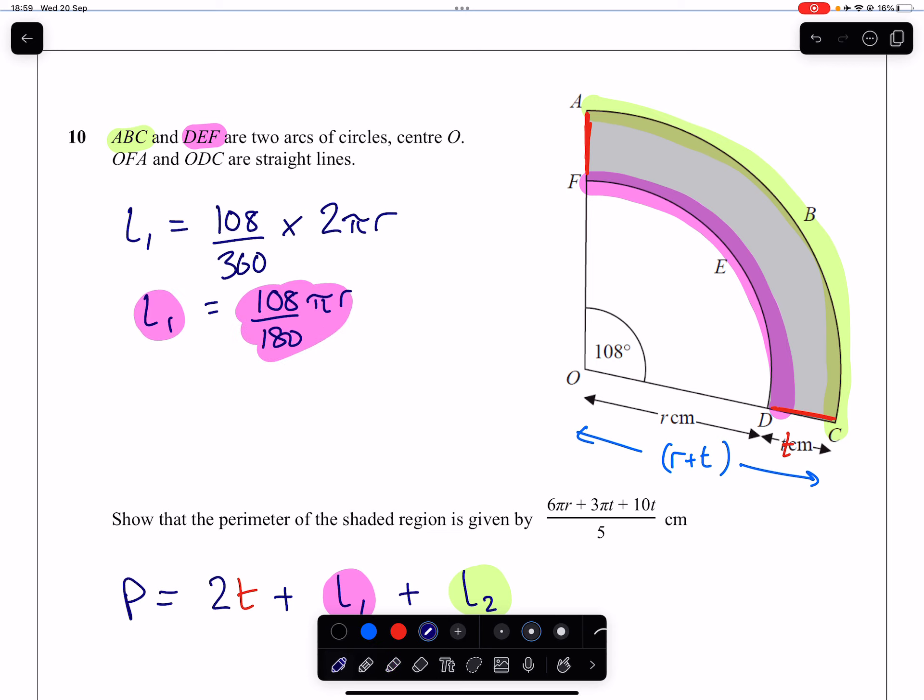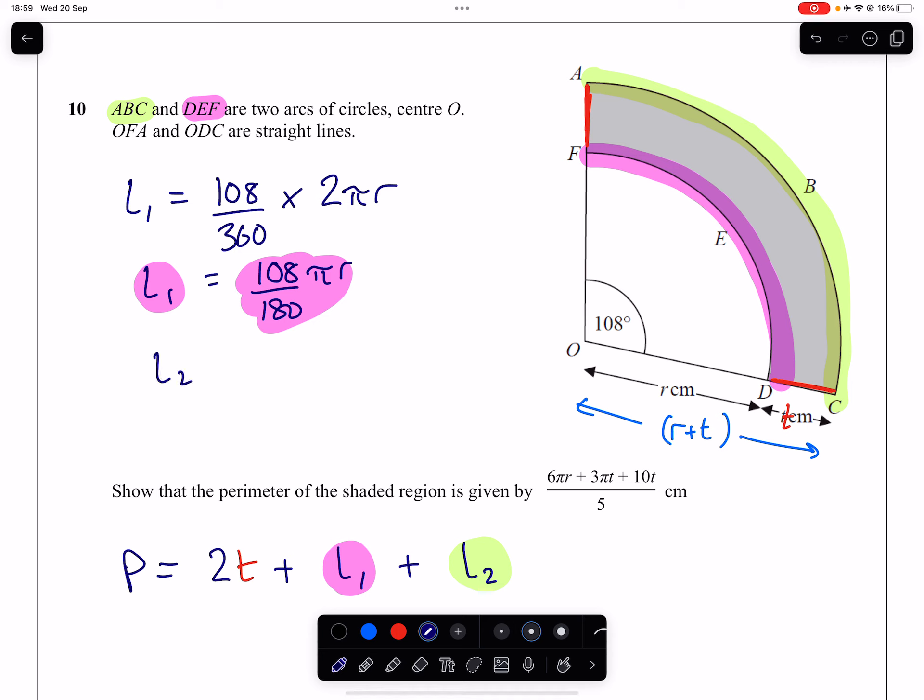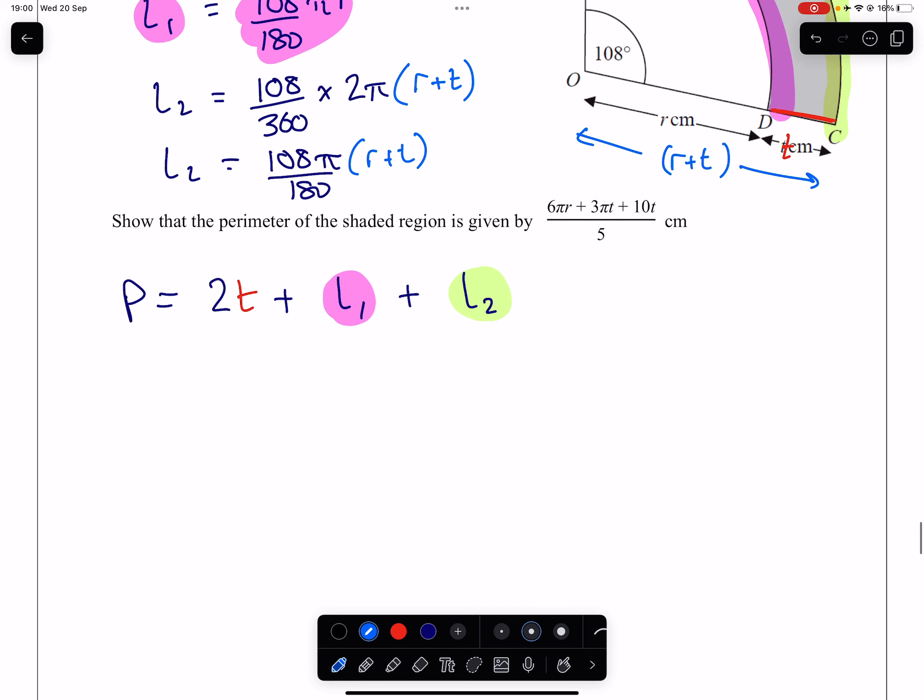So L2, very similar, same angle, just a different radius. So we've got 108 over 360 times 2π times the radius in this case is now this bracket R plus T. And simplifying this part here, we're going to get the same 108π over 180. And I'm just going to leave that in the brackets for now. We have an R plus T stuck to that.